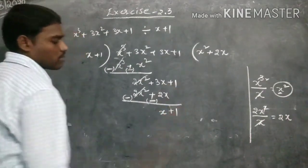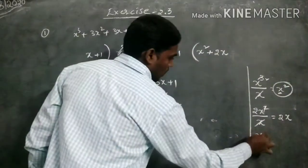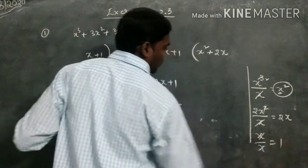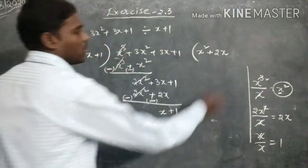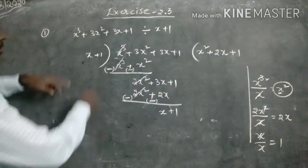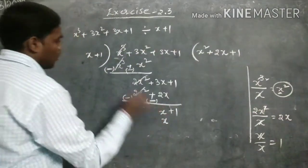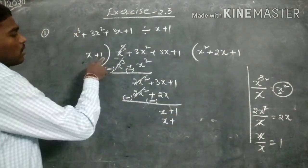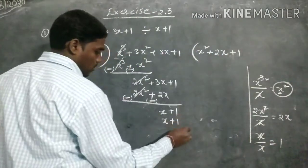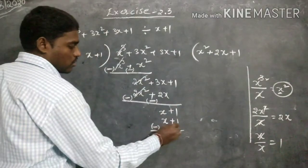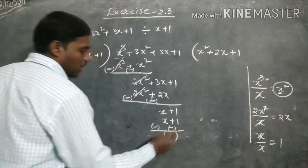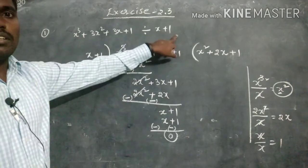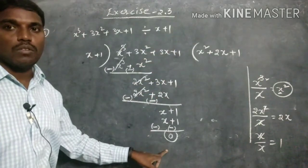Bringing down plus 1, the first term is x. Dividing x by x gives 1, so the next quotient term is plus 1. Multiplying: x into 1 is x, plus 1 into 1 is 1. Subtracting — both are minus — they cancel, so the remainder is 0. If this polynomial is divided by x plus 1, we get remainder equal to 0.